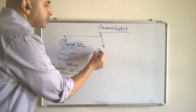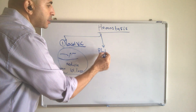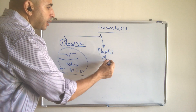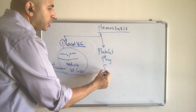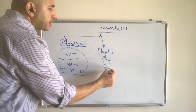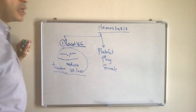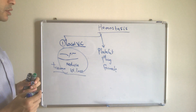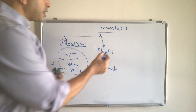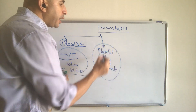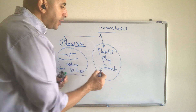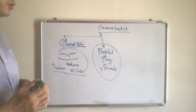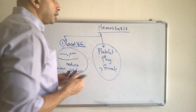The second step in hemostasis is platelet plug formation, and the third step is blood clotting. Now, how does platelet plug formation occur?